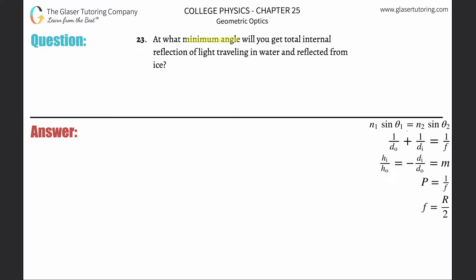Number 23, at what minimum angle will you get total internal reflection of light traveling in water and reflected from ice? All right.